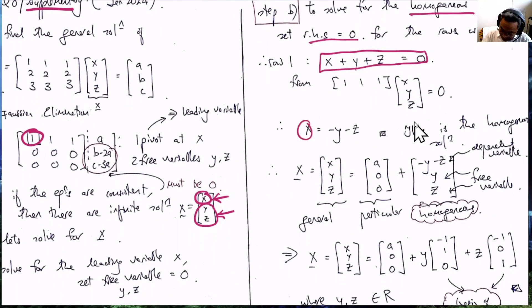Now we set the dependent variable X equal to the 2 free variables, so we move Y and Z across to the other side.